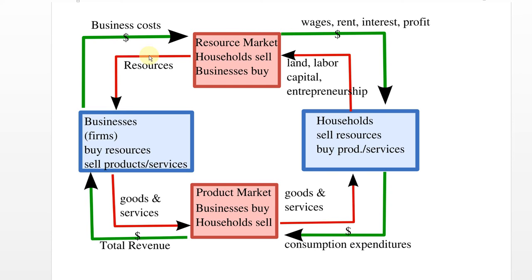Those resources go to businesses where they use them to produce products, and businesses have to pay the money in the resource market that flows over to households. On the bottom side of this diagram we're looking at the product market. This is where the goods and services produced by businesses are exchanged for money from households. The goods and services come from the businesses into the market, people buy them and take them home. The households give the money they earned from selling their land, timber, or talents in the product market to the businesses — this comes back to businesses as total revenue.